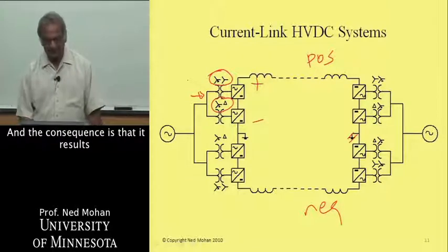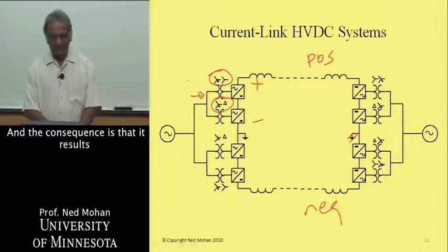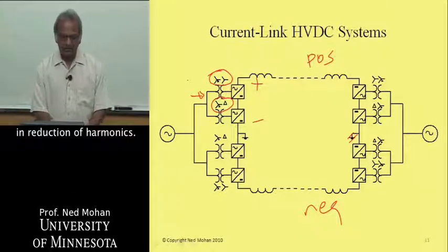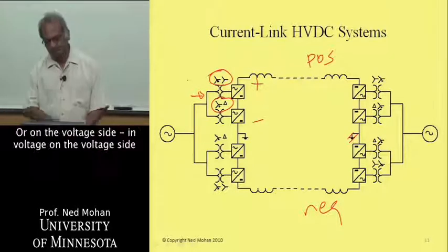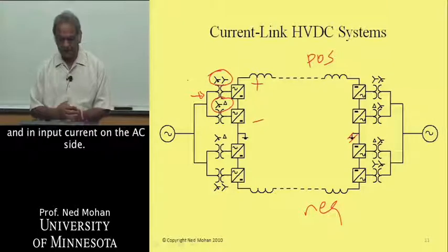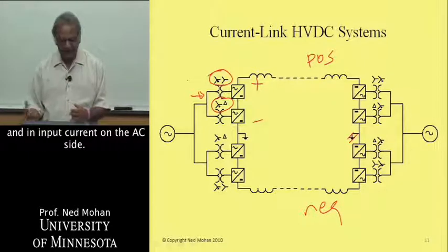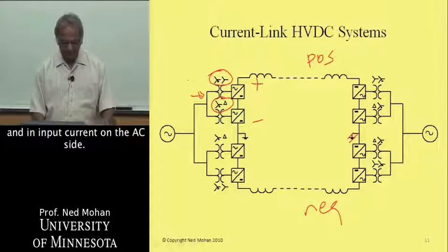The six-pulse operation for the voltage here, and the current here, from six-pulse it becomes 12-pulse. The consequence is that it results in reduction in harmonics, both on the voltage side and in input current on the AC side.